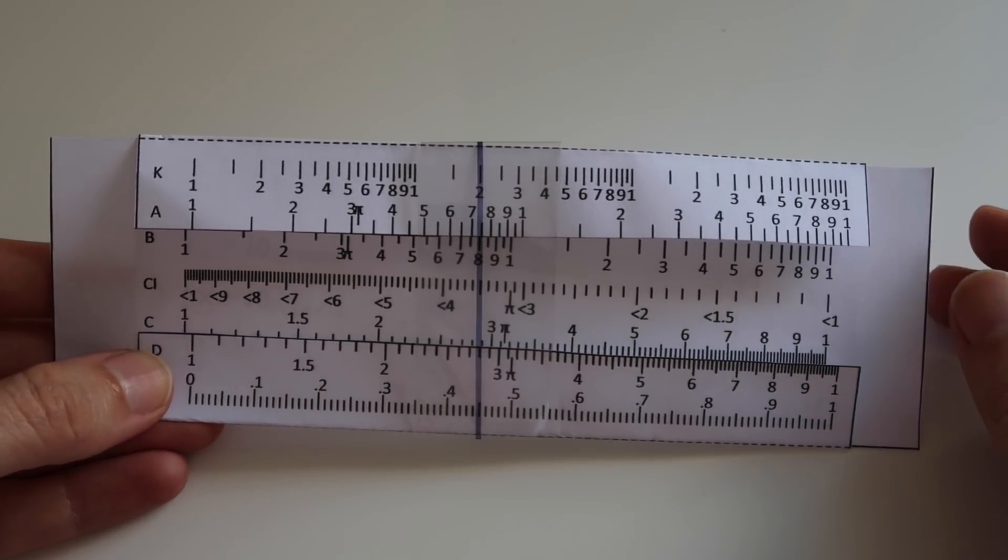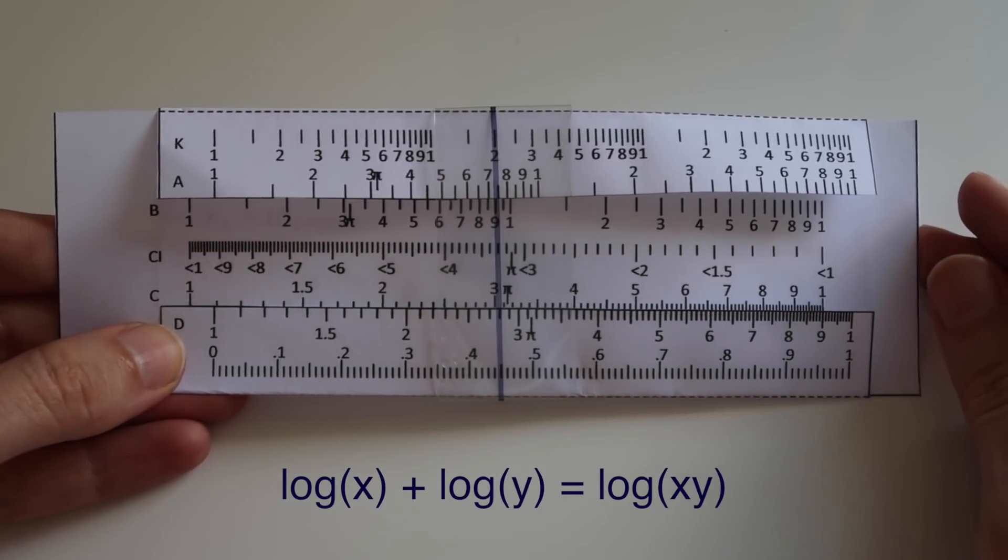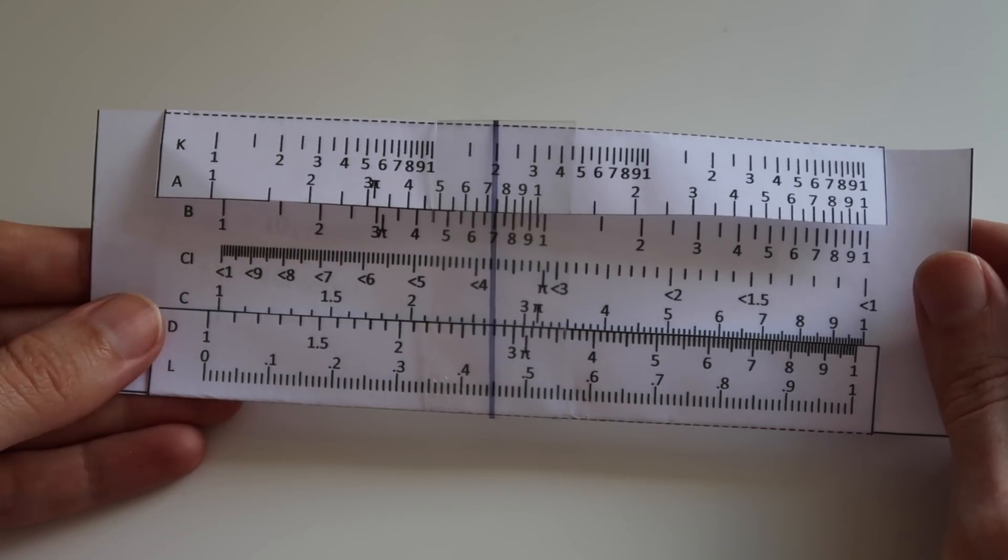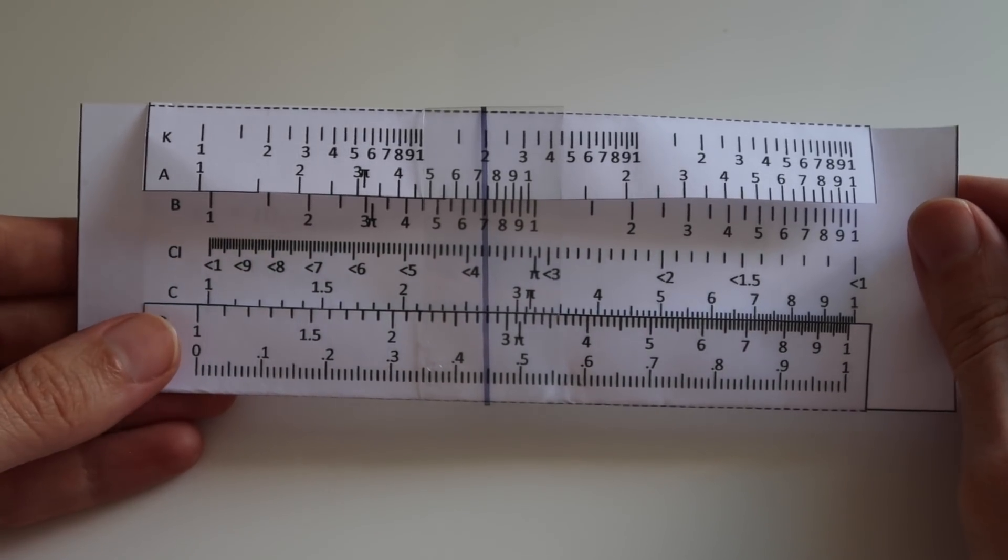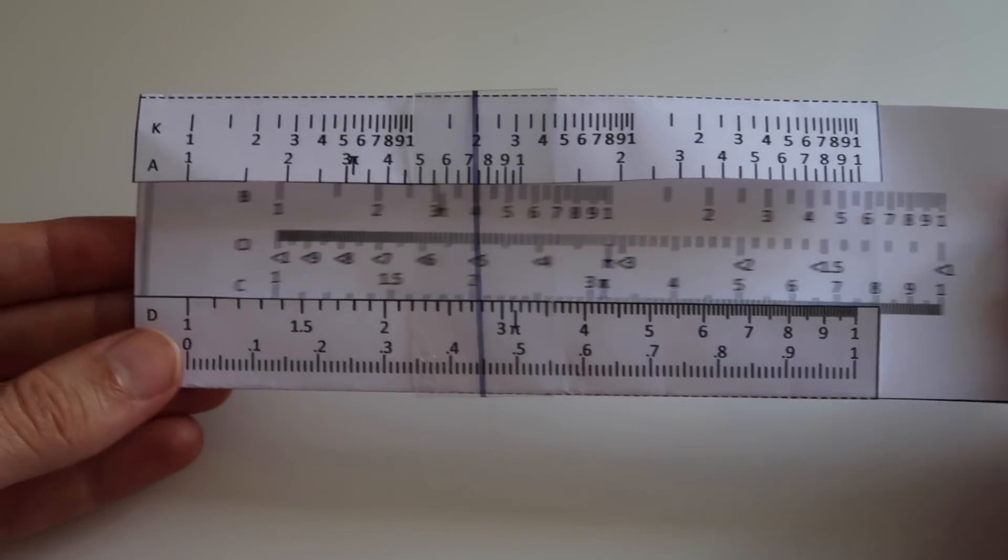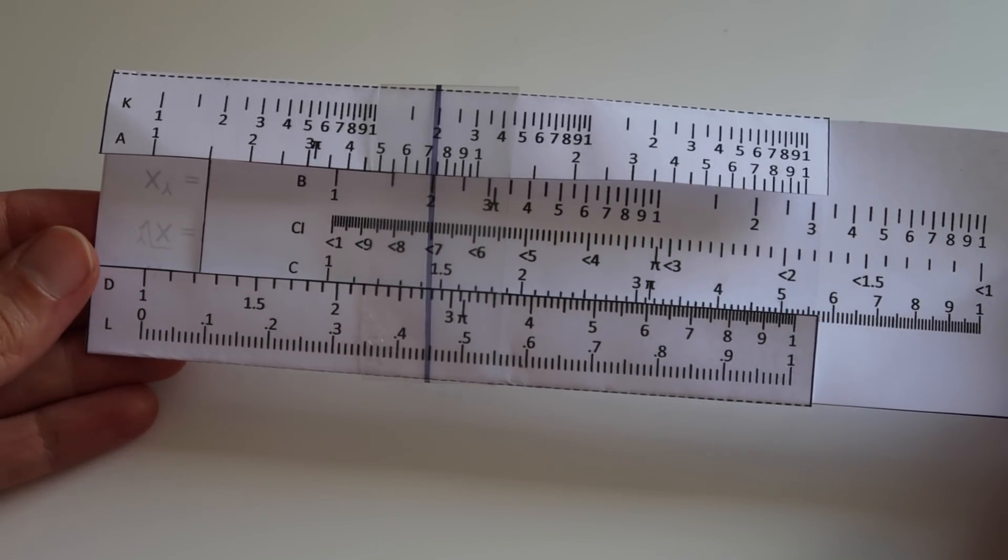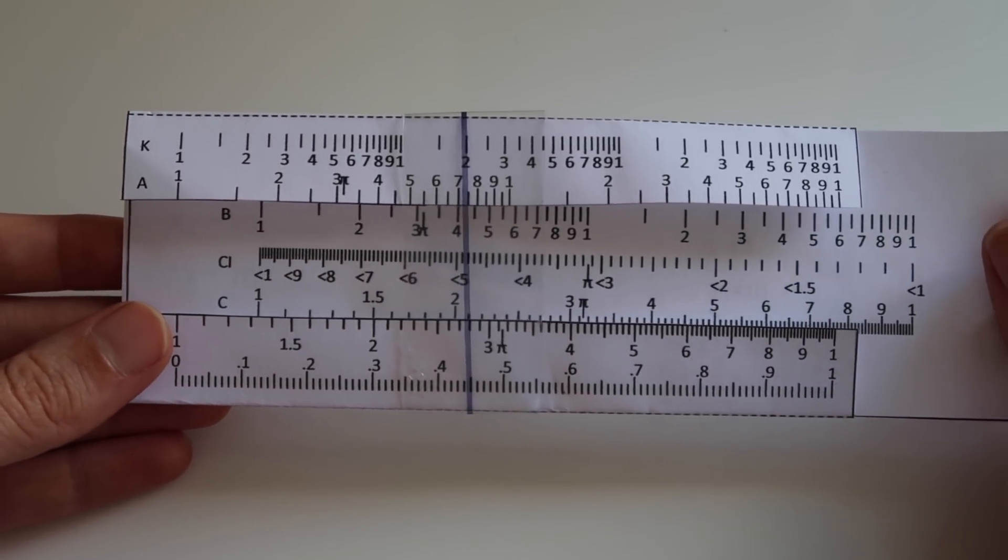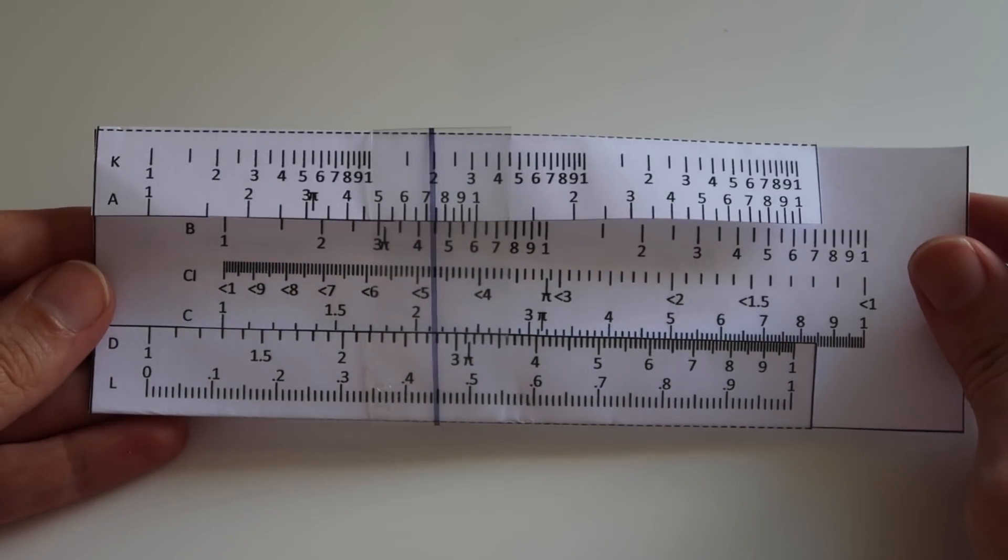This is because this part of the slide rule, which is used for multiplication and division, is exploiting properties of logs, and specifically the property that log of x plus log of y is equal to log of xy. So if we want to find the product xy, what we do is we can add the log of x to the log of y, which we kind of do by sliding it like this, and then take the antilog of what we get, the product.